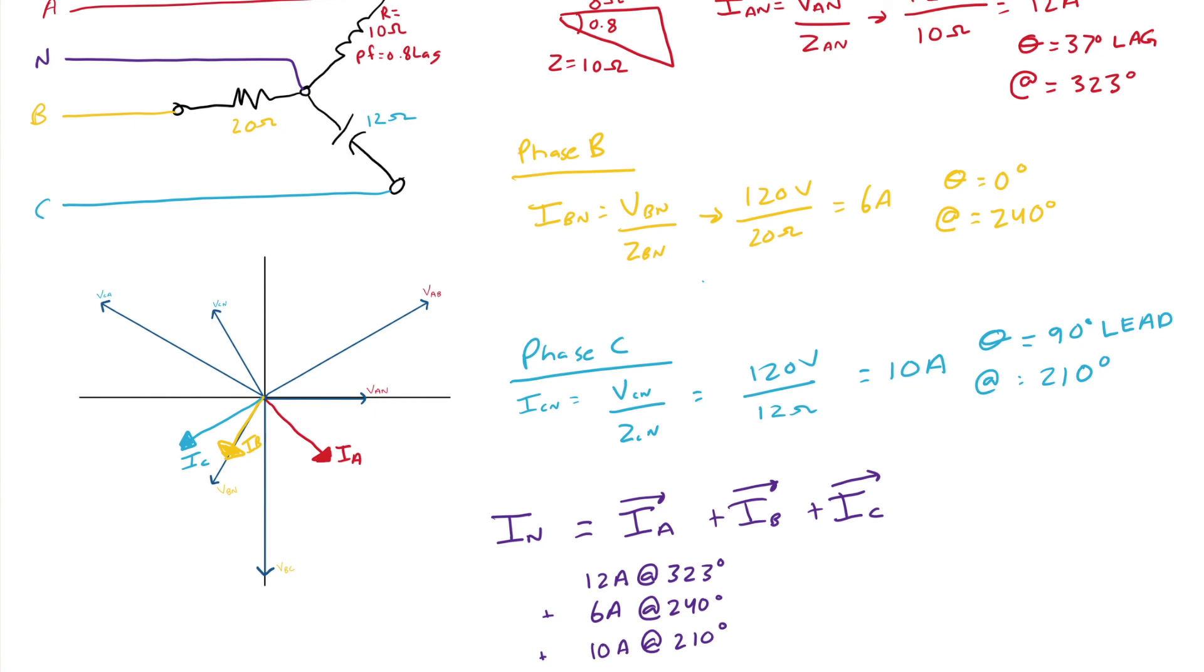Now I'm going to add these up using polar rectangular format on my calculator, or I'm going to use an HV chart, a horizontal vertical chart, which check out my other video on that if you're not sure. But when I add those up at the end of the day, in this case, I would end up with a neutral current of 17.5 ish amps at an angle of 263 degrees.